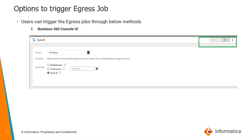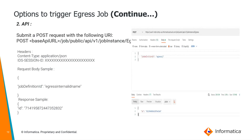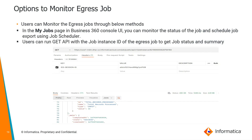Users can trigger the egress job through the following methods: first, through the Business 360 console UI directly — open the respective job instance and click Run. The second method is via a POST API where you pass the respective job definition ID and initiate the process through Postman. Once triggered, users can monitor egress jobs through the My Jobs page in the Business 360 console UI, or by running a GET API with the job instance ID to fetch the job status and summary through Postman.